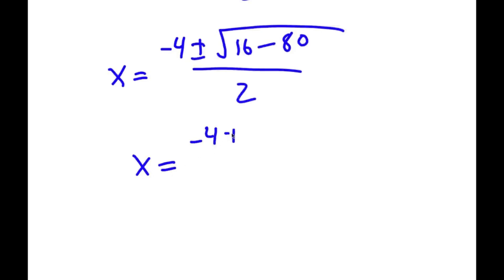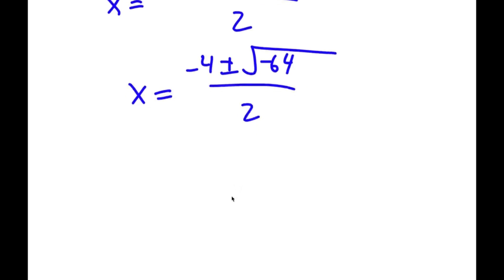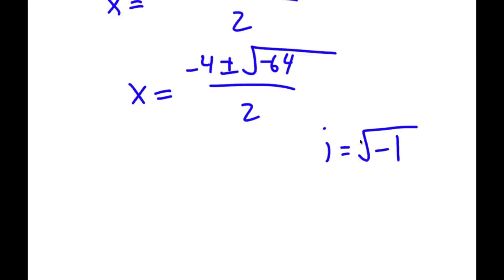And now I have negative 4 plus or minus the square root of 16 minus 80, which is negative 64, over 2. As you can see, we have the square root of a negative number. A lot of you watching this probably think that's not possible, but that's where i comes into play — the imaginary number i. The imaginary number i is equal to the square root of negative 1, and we can use this to find a solution.